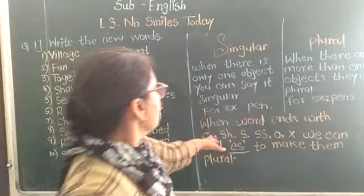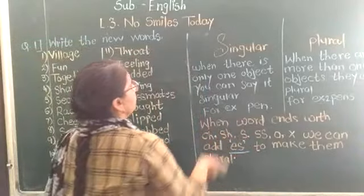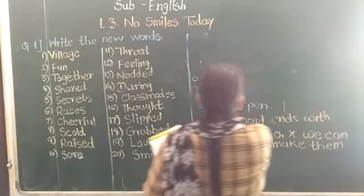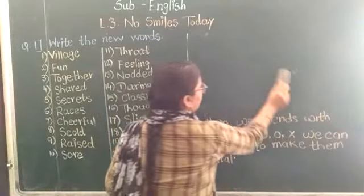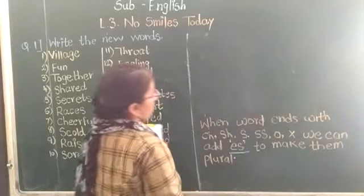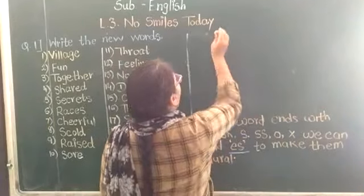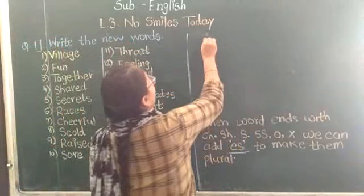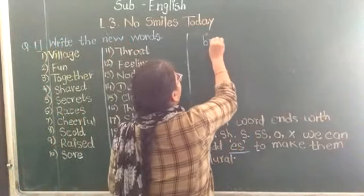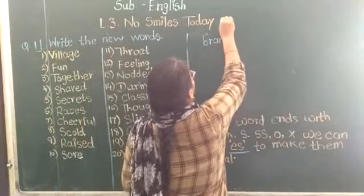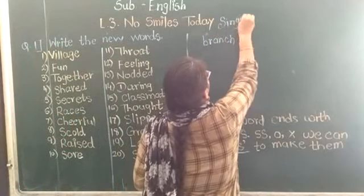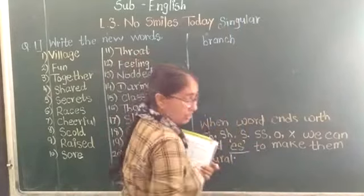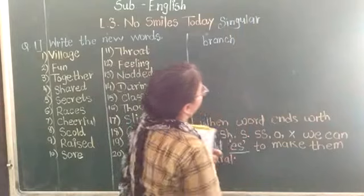When the noun ends with CH, we add ES to make it plural. For example, branch — B-R-A-N-C-H — is in singular form. Since it ends with CH, we add ES to make it plural. So branch becomes branches.